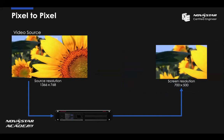Mostly, the source resolution is different from the screen resolution. For example, the video source might be 1366 by 768, while the screen resolution is 700 by 500. Because the source resolution is much bigger than the screen resolution, the screen will display only part of the video source. We call this kind of display pixel-to-pixel display. In this situation, we only use the sending card — give the video source to the sending card and display it on the screen.